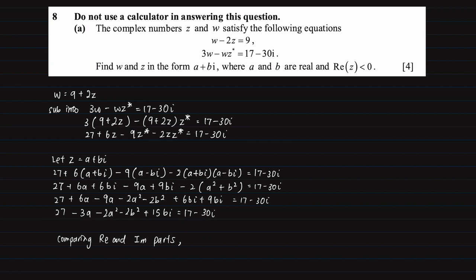So by comparing the coefficients we have 27 - 3a - 2a² - 2b² equals 17, and 15b equals minus 30. Remember we are comparing the coefficients of the real and imaginary parts.